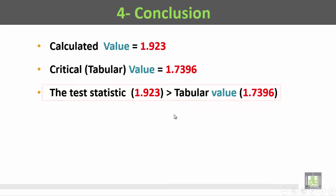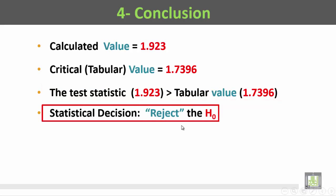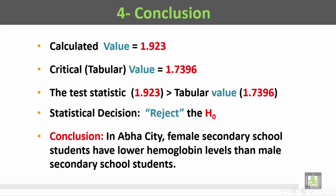So our statistical decision is to reject the null hypothesis. In conclusion, in Abha City, female secondary school students have lower hemoglobin levels than male secondary school students.